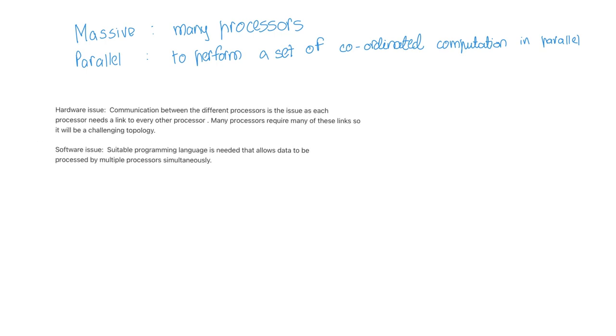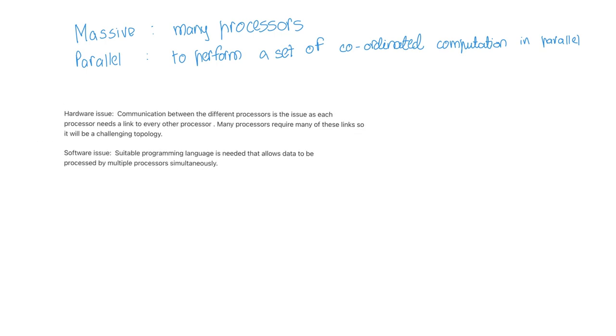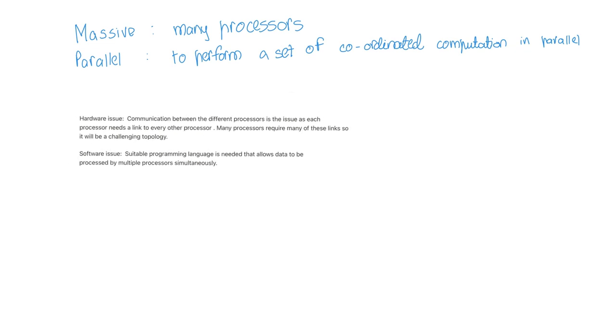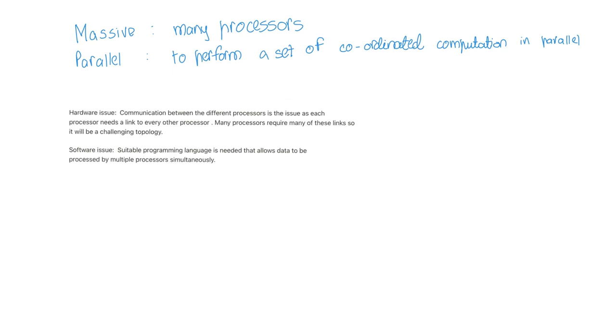We are also faced with software issues. So a suitable programming language is needed that allows data to be processed by multiple processors simultaneously. So changes are required to a normal program code when being transferred to a massively parallel computer.